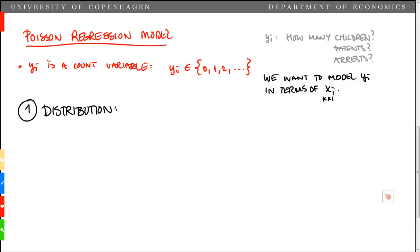And here, since yi is a count variable, the natural choice is a Poisson distribution. So, the probability that yi takes on the value y, given parameter lambda i, is equal to the exponential of minus lambda i multiplied by lambda i to the power of y, divided by the factorial function of y.